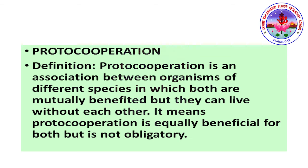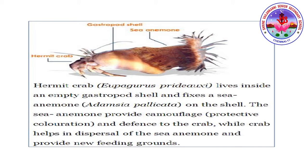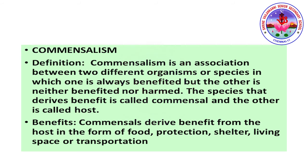Proto-cooperation is an association between organisms of different species in which both are mutually benefited, but they can live without each other — it is beneficial for both but not obligatory. An example is the hermit crab and sea anemone. The hermit crab, biologically called Eupagurus prideauxi, lives inside an empty gastropod shell and fixes the sea anemone Adamsia palliata on the shell. The sea anemone provides camouflage (protective coloration) and defense to the crab, while the crab helps in the dispersal of the sea anemone and provides new feeding grounds.